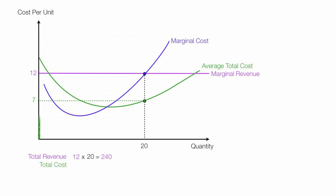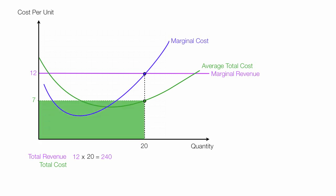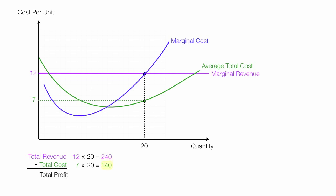Total cost is equal to 7 times 20, shown by the green rectangle. 7 times 20 equals 140. That's average total cost times quantity. So total revenue minus total cost equals total profit: 240 minus 140 equals 100, which is total profit.